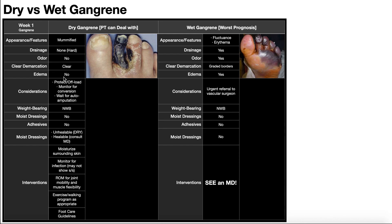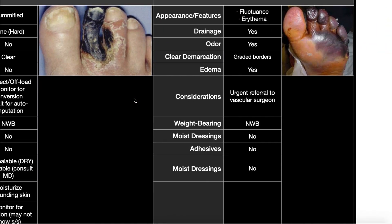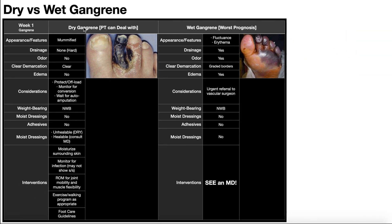With dry gangrene, there's no drainage and no edema expected. There's also going to be no odor — generally you only get an odor if there's an infection, but because dry gangrene has not become infected, it's just dead, so there's not going to be any odor. There's also going to be clear demarcation between the gangrenous black tissue and the adjacent tissue. If you look at where this black tissue is, there's pretty clear demarcation between where the black is and where it is not. When we look at wet gangrene, we'll see it's more graded with no clear demarcation.